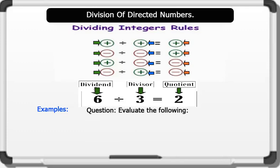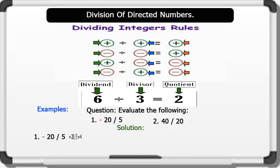Evaluate the following. 1. Minus 20 divided by 5. 2. 40 divided by 20. Solution. 1. Minus 20 divided by 5 equals 20 divided by 5, which gives us 4. Remember that there is an invisible plus sign in 5. Dividing the signs: according to the rule, minus divided by plus will give us minus. Therefore, minus 20 divided by plus 5 equals minus 4.